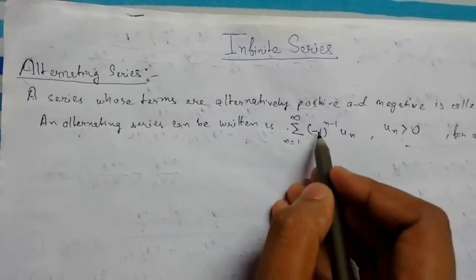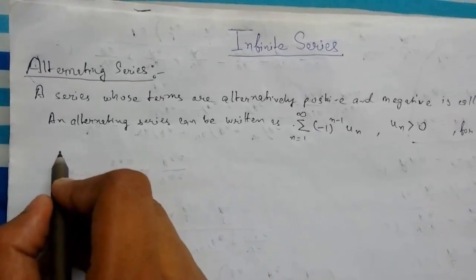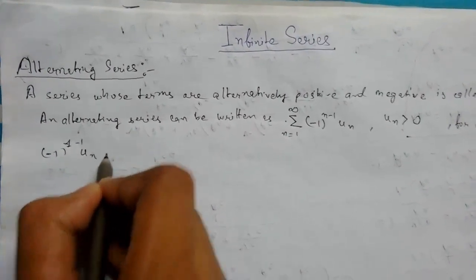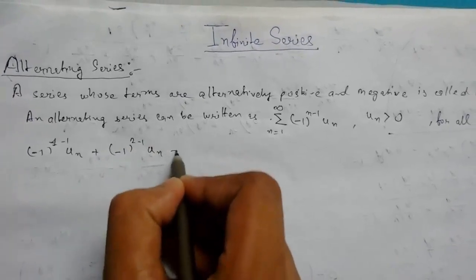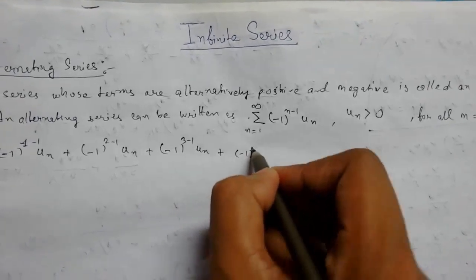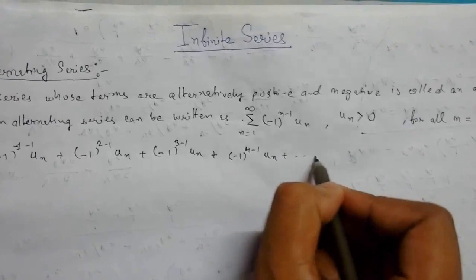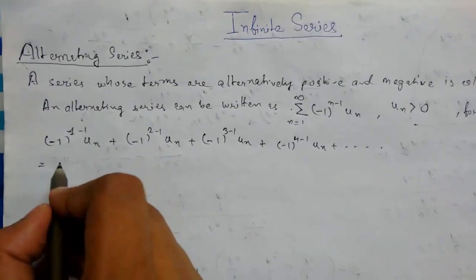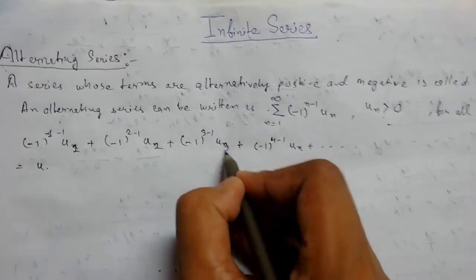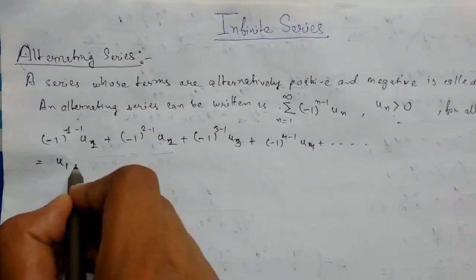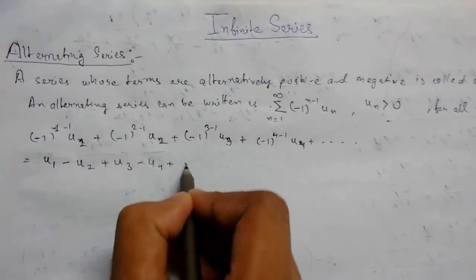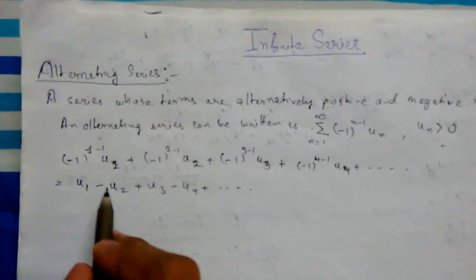Let me show how an alternating series looks. Putting n = 1, 2, 3, 4 we get: minus 1 to the power 1 minus 1 times u_1, plus minus 1 to the power 2 minus 1 times u_2, and so on. This simplifies to u_1 minus u_2 plus u_3 minus u_4, up to infinity. This is how an alternating series looks.